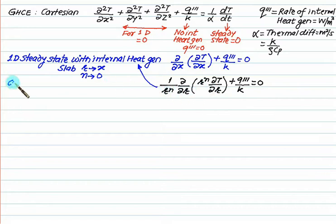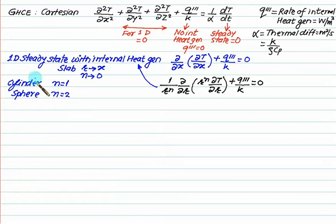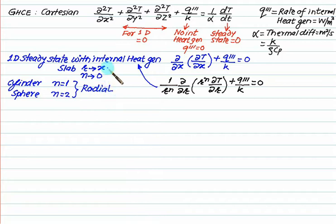For cylindrical coordinates (cylinder problems), put r = r and n = 1. The governing equation becomes: (1/r) · d/dr(r · dT/dr) + q'''/k = 0. For spherical coordinates, put n = 2, giving: (1/r²) · d/dr(r² · dT/dr) + q'''/k = 0. All heat transfer is radial for cylinder and sphere, and axial for slab.